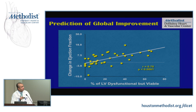Using a threshold of about 5% increase in LV ejection fraction to define global improvement, that corresponds along the regression line to about 25% of the left ventricle that is dysfunctional but viable — consistent with the 25% threshold discussed earlier with echo and nuclear techniques.